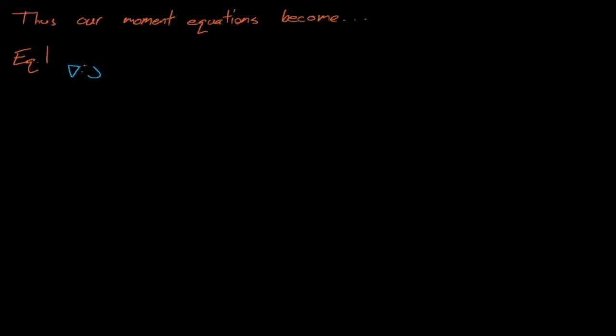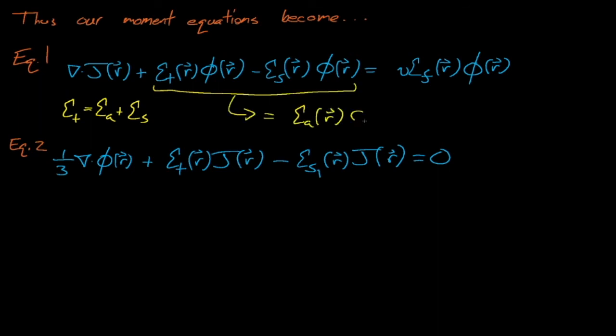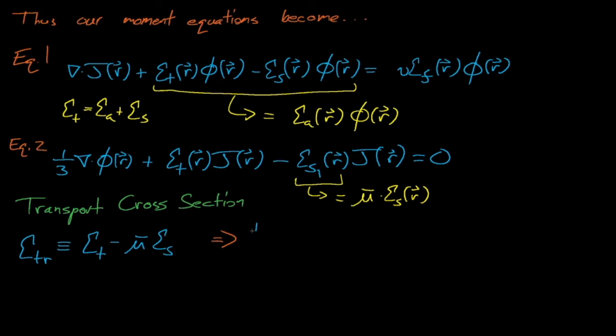These five assumptions allow us to rewrite the P1 equations as shown here. We can simplify these equations some more, first by replacing the collisional term and the scattering source term by the sigma absorption term, which we can do since sigma total minus sigma scatter just equals sigma absorption. Next, we'll replace the first moment of the double differential scattering cross-section with mu bar times the zeroth moment of the scattering cross-section, which is just the scalar scattering cross-section for our mono-energetic system. We'll also define the transport cross-section, sigma tr, which equals sigma total minus mu bar times sigma scatter. We'll discuss exactly what this term represents in a minute.